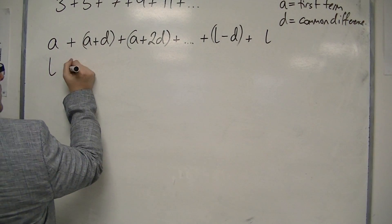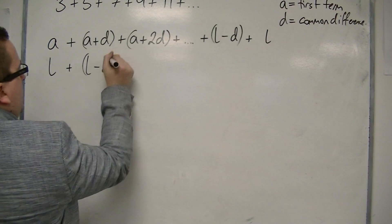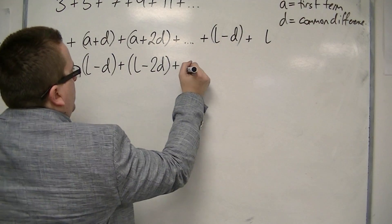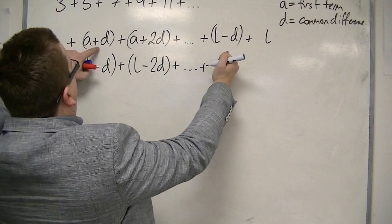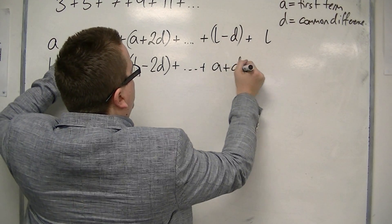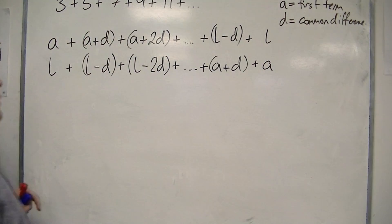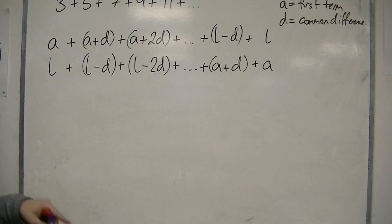then I've got L plus L minus D, and then I'm going to have L minus 2D, plus da-da-da-da-da-da. Here we would have had A plus D, and here we would just have A. So I've written exactly the same sequence underneath.